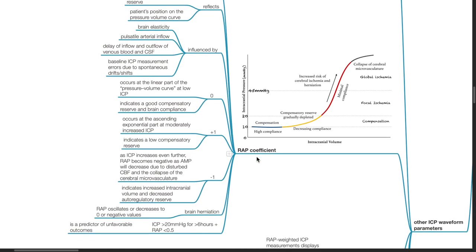When RAP equals 0, it occurs at the linear part of the pressure volume curve at low ICP. It indicates good compensatory reserve and brain compliance. When RAP coefficient is plus 1, this occurs at the ascending exponential part at moderately increased ICP. It indicates low compensatory reserve. When RAP coefficient is negative 1, as ICP increases even further, RAP becomes negative as AMP will decrease due to disturbed CBF and collapse of the cerebral microvasculature. This indicates increased intracranial volume and decreased autoregulatory reserve. Brain herniation: RAP oscillates or decreases to 0 or negative values. An ICP of more than 20 mmHg for more than 6 hours plus RAP of less than 0.5 is a predictor of unfavorable outcomes.